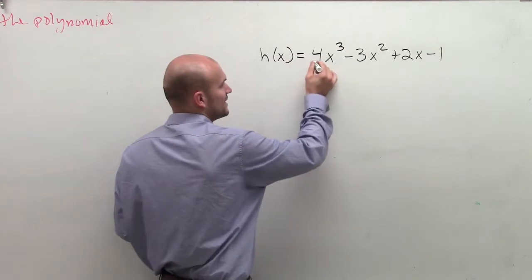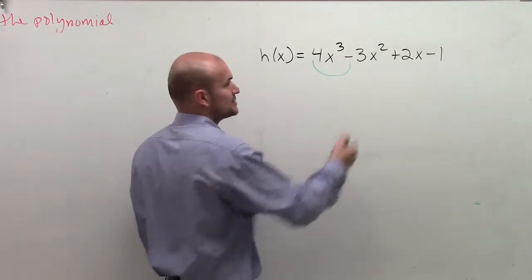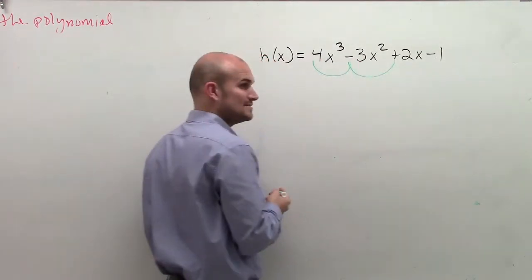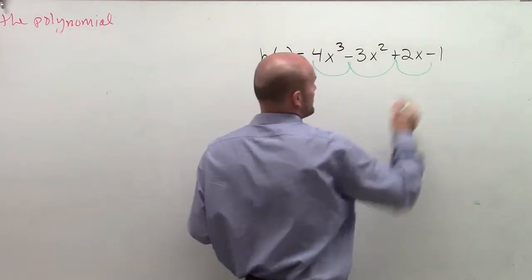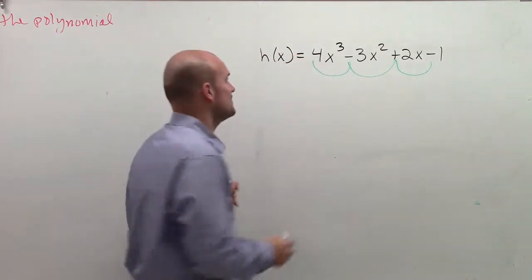The variation of sign means if I go from a positive to a negative, that's a variation. Then if I go from a negative to a positive, that's another variation. Then I go from a positive to a negative. So I have three variations.